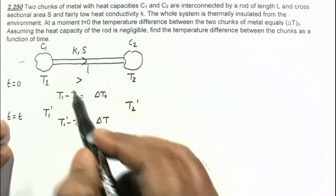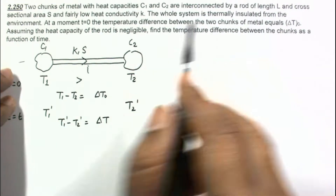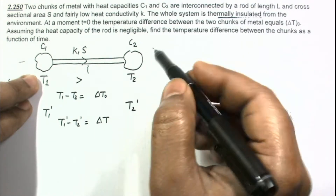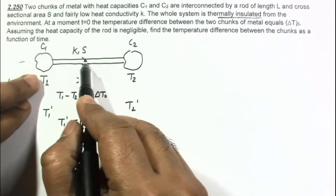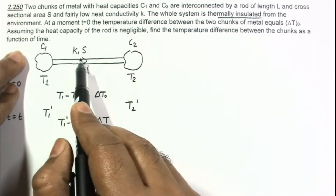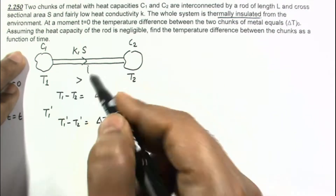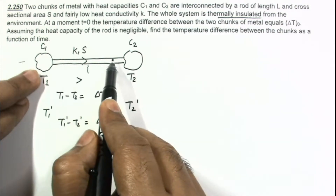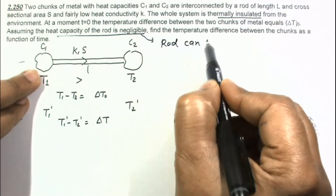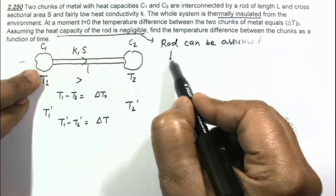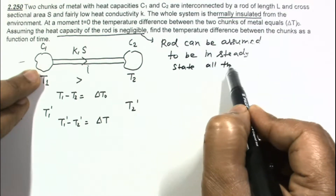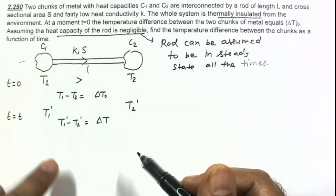Since T1 is greater than T2, heat will flow from chunk 1 to chunk 2. It is given that the whole system is thermally insulated from the environment, so heat is conducted only through conduction. It is also given that the heat capacity of the rod is negligible, meaning the rod is not absorbing any heat. Therefore we can assume the rod to be in steady state at all times.